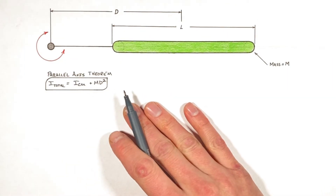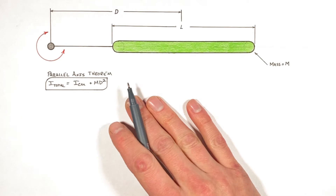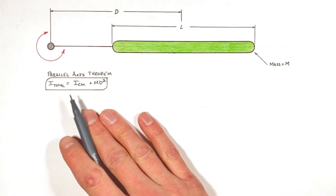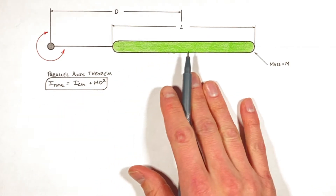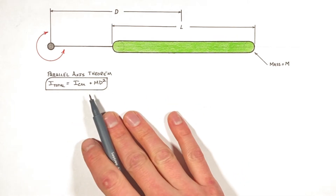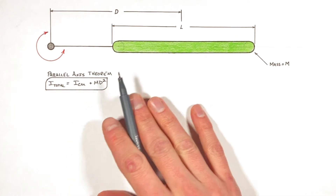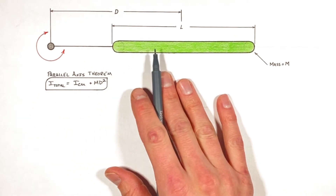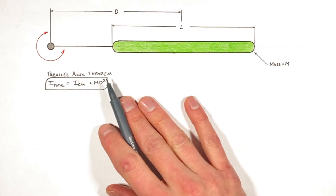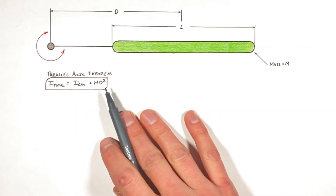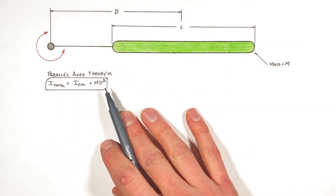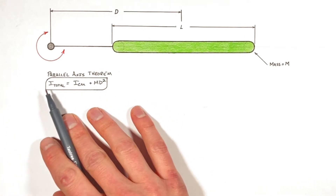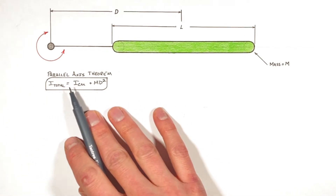Today I want to mathematically derive the parallel axis theorem. Previously I've gone through and explained where the parallel axis theorem comes from conceptually as well as how to apply it, but what I want to do here is simply stick to the strict math side of physics and work out exactly how this equation came to be.